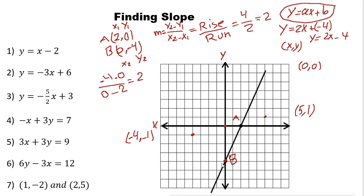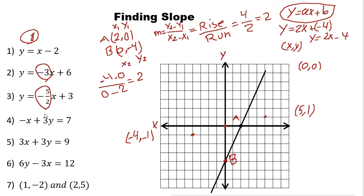So if you are given Y = 2X − 4, the slope is simply 2. Let's look at some examples. For the first equation, the coefficient of X is 1 (we don't write 1×X, just X), so the slope is 1. For the next one, the slope is negative 3. For another, the slope is −5/2.